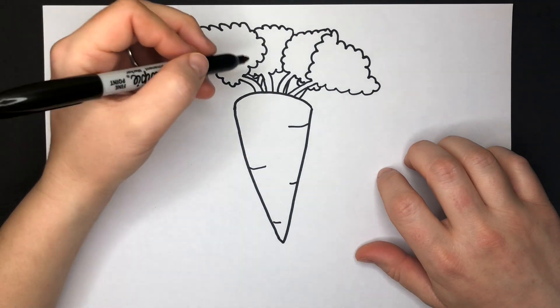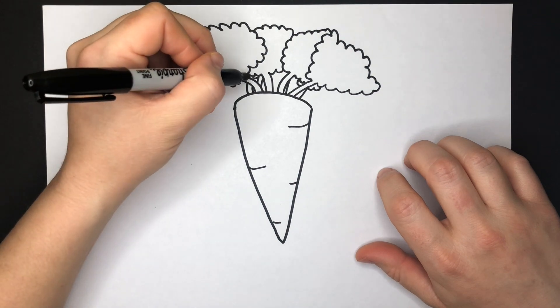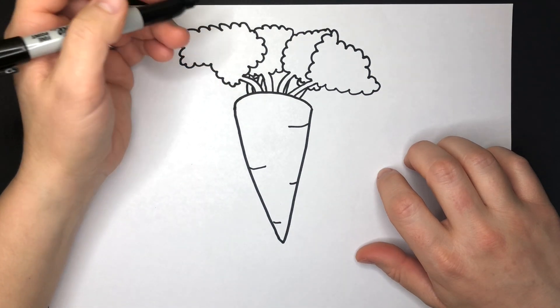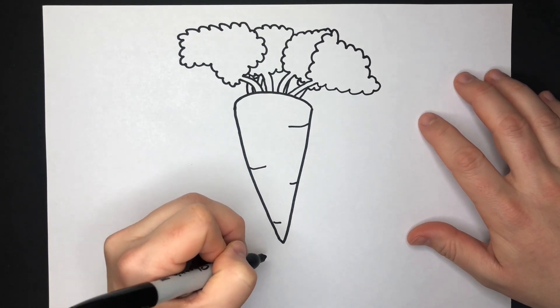Great. And then as you see, I'm just adding some stems in the background because I want it to look a little bit dimensional, that you can see that there's more that you can't see in the photo.